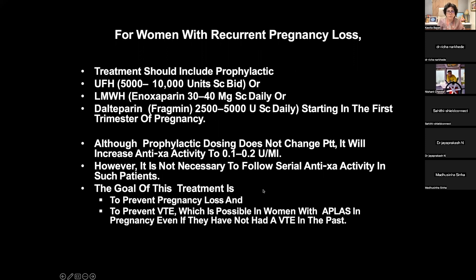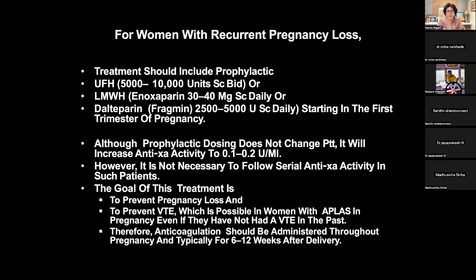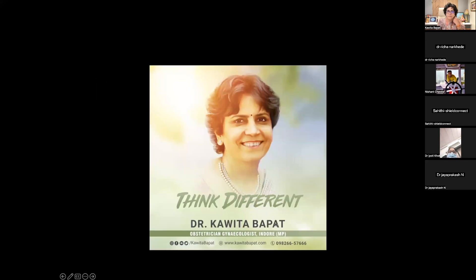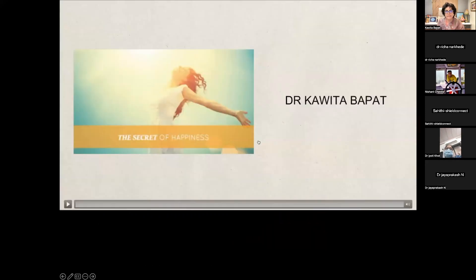The goals of treatment are: number one, to prevent pregnancy loss; number two, to prevent VTE, which is possible even in women with APS who have had VTE in the past. Therefore, anticoagulation should be administered throughout pregnancy, typically for 6 to 12 weeks after delivery. For women with autoimmune thrombocytopenia, severe preeclampsia, IUGR, or placental abruption, optimal treatment is unknown; postpartum anticoagulation is probably not necessary in these cases.